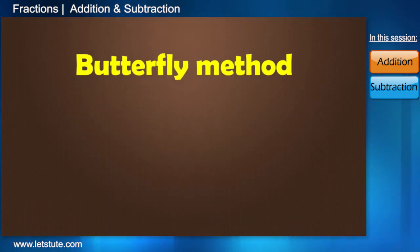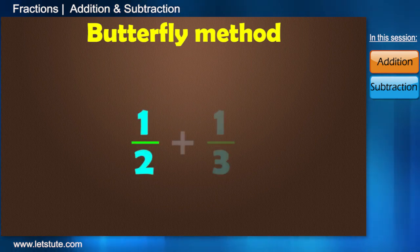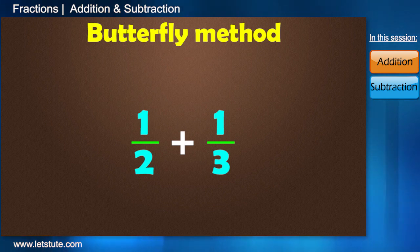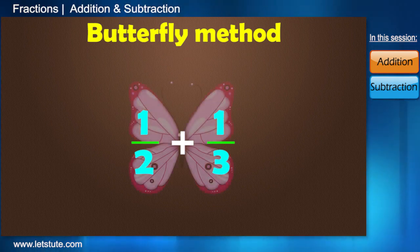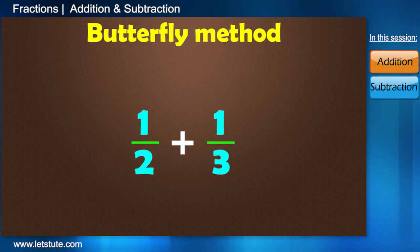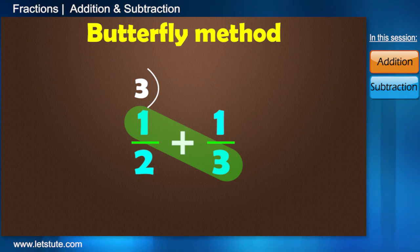We had two fractions, 1 by 2 and 1 by 3. We will try to make a pattern which will be very similar to a butterfly. First, we multiply 1 into 3 and we write it at the top left corner. Then, we multiply 1 by 2 and write it at the top right corner.